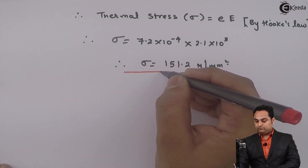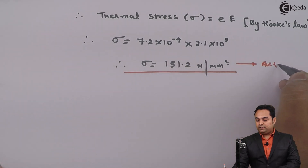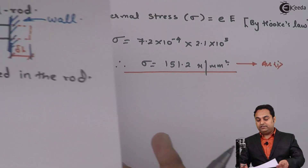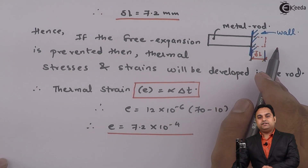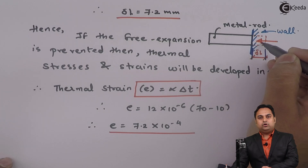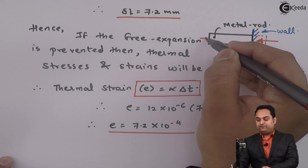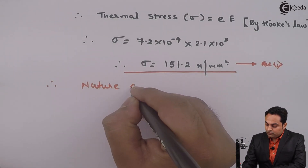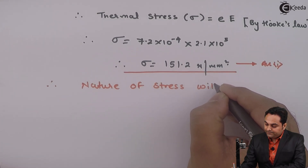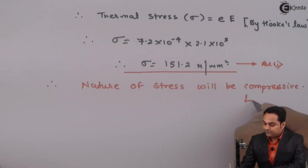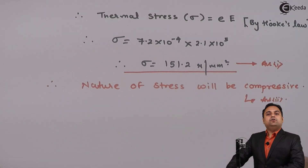This is the answer for the magnitude of stress. The problem also asks for the nature of stress. When the metal rod was freely expanding, stress induced was zero, but attaching a wall means there is a force acting from the wall toward the metal rod, and that force is compressive. Therefore, the nature of stress will be compressive because we are preventing free expansion. This concludes the problem on temperature stress and strain.